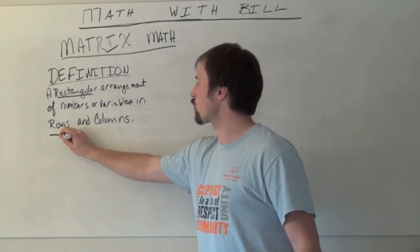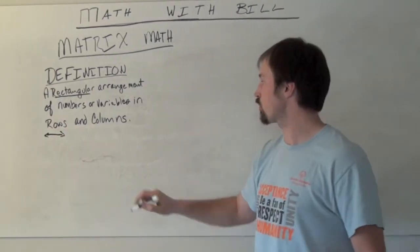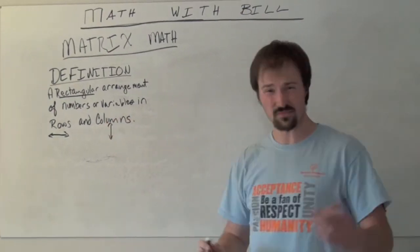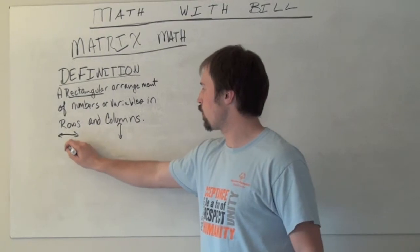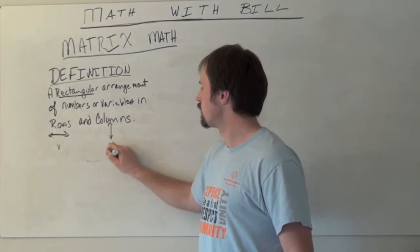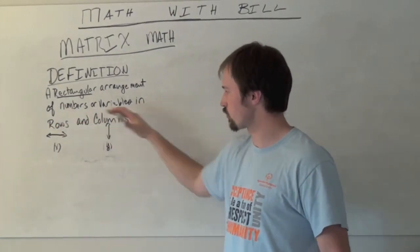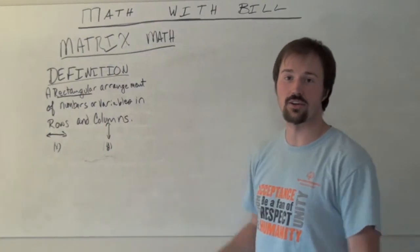Rows are going to be any type of a horizontal line of numbers, whereas a column is vertical. Horizontal then vertical. This is a lot like our x and then y. Even though we won't be working with that, we name things in terms of rows and columns as well as we name our horizontal first and then our vertical.